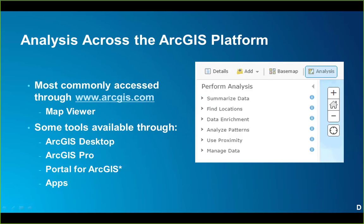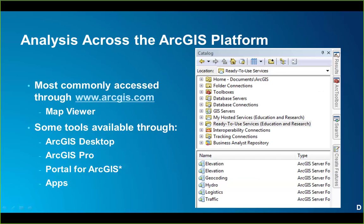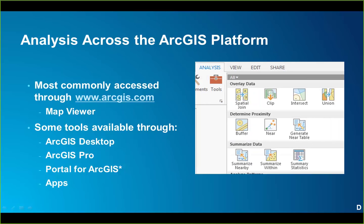In ArcGIS Online, analysis tools are most commonly accessed from the map viewer, however some of these tools can also be accessed directly from ArcGIS for Desktop and ArcGIS Pro. In Desktop, once you sign in with your credentials you have two folders: one titled My Hosted Services giving access to all content you host in ArcGIS Online, and a second titled Ready-to-Use Services providing access to premium content services related to geocoding, network analysis, and so on. In ArcGIS Pro, a lot of the same tools are built right into the analysis tab, and Pro is built with web mapping in mind so you'll be able to access all the same tools and content.